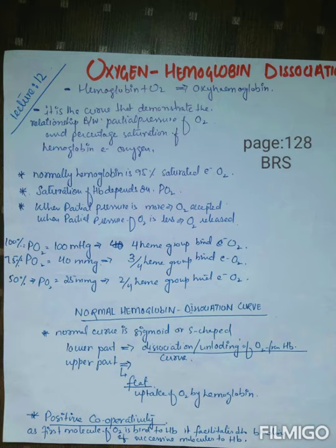Looking at the hemoglobin dissociation curve on page 128, there is a sigmoid shape. The lower part of the curve is S-shaped and the upper part is flat. The lower sigmoid part shows the dissociation or unloading of oxygen — at low pressure, hemoglobin releases oxygen. The upper flat part, corresponding to 75–100 mmHg pressure, shows the uptake of oxygen by hemoglobin.